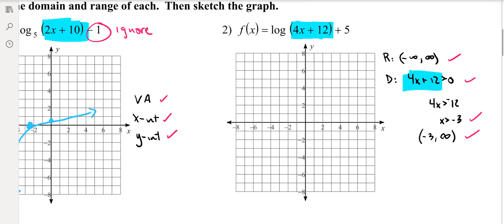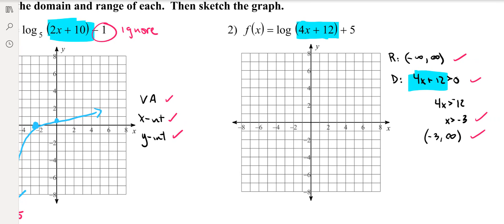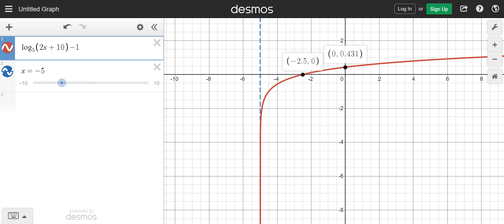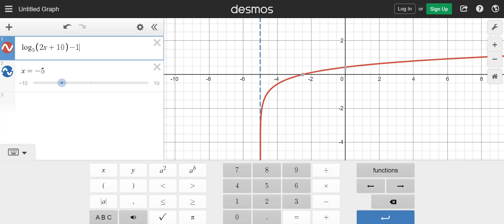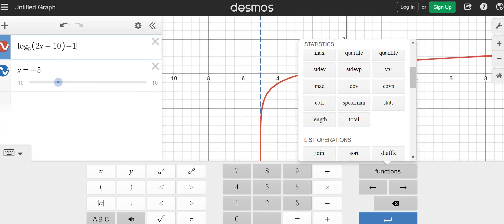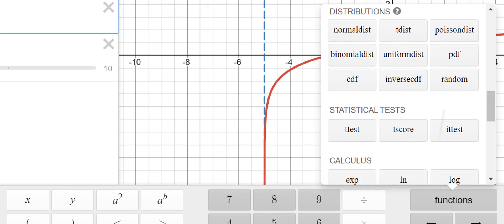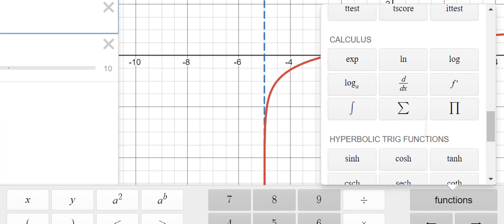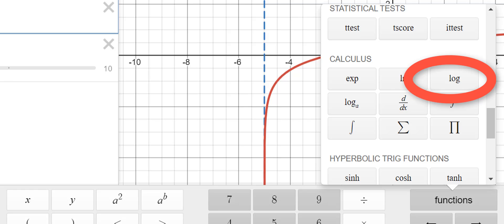So if you take a look at number two, there's no base written. So again, we assume that the base is 10, but Desmos is pretty cool because on Desmos, when we look in there, if we go to the little keyboard and we go over to the functions, scroll all the way down to where it says calculus, you'll notice one of them in the top row of the calculus section is just log with a base of 10 because again, they don't write 10 for the base.